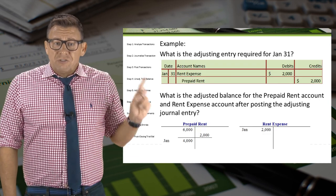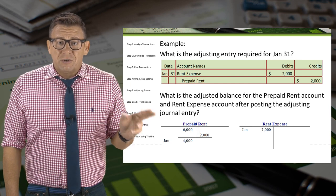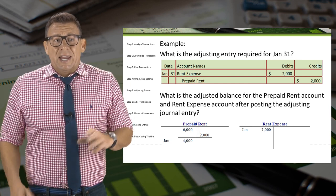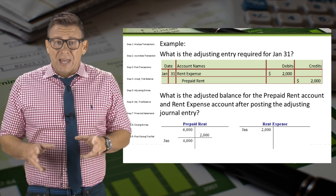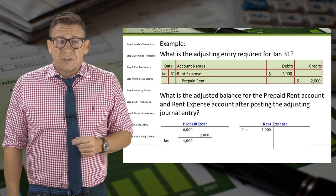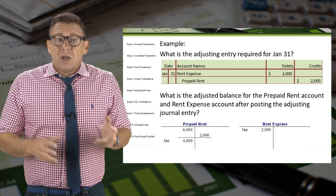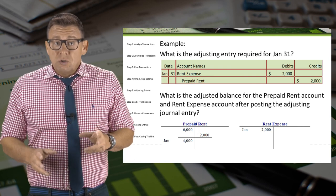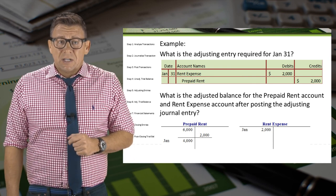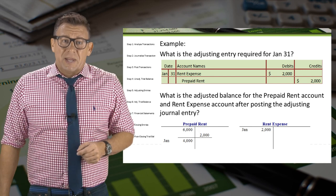The adjusting entry on January 31 is a debit to the expense account, rent expense, and a credit to the asset account, prepaid rent, for $2,000. At the end of the month, Morrissey used up $2,000 of the prepaid asset. When we use up assets, we create expense.